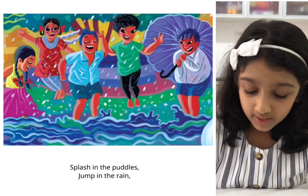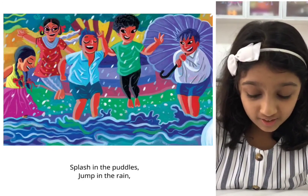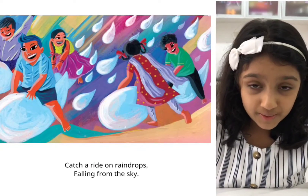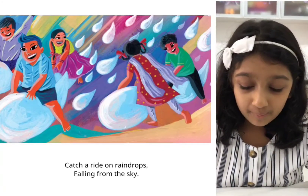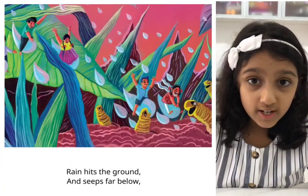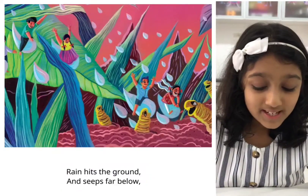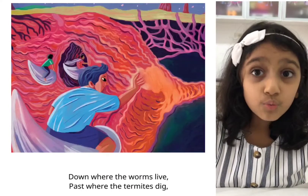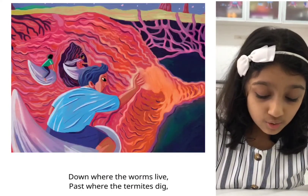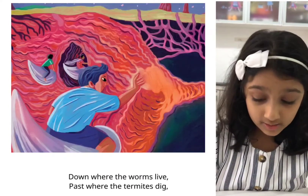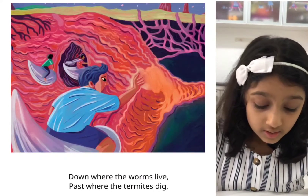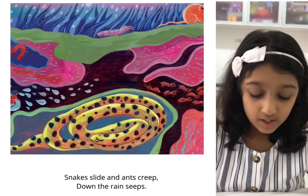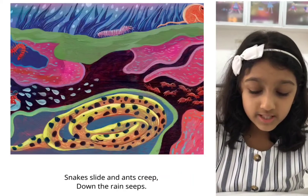Splash in the puddles, jump in the rain. Catch a ride on raindrops falling from the sky. Rain hits the ground and seeps far below. Down where the worms live, past where the termites dig. Snakes slide and ants creep. Down the rain seeps.